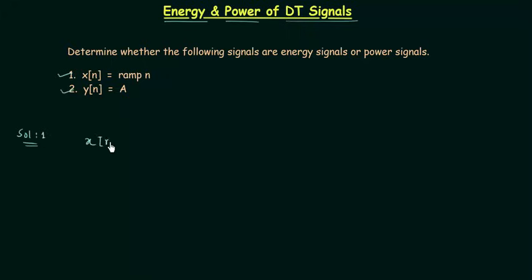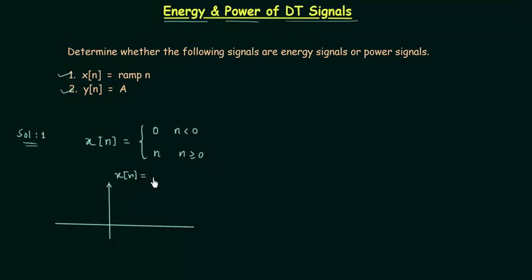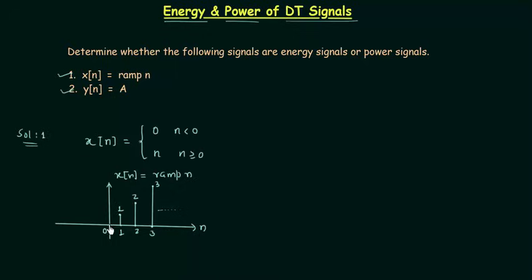Signal x[n] is the basic unit ramp sequence. It is equal to 0 when n is less than 0, and it is equal to n when n is greater than or equal to 0. Now I will plot the waveform of signal x[n]. When n equals 0, x[n] is also 0. When n equals 1, x[n] equals 1. When n equals 2, x[n] equals 2. When n equals 3, x[n] equals 3. In the same way, when n equals n, x[n] equals n. You can see there is formation of a ramp.